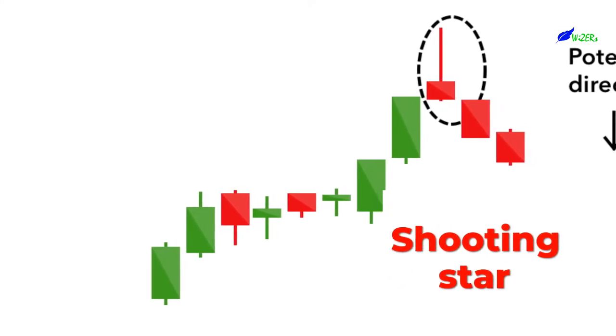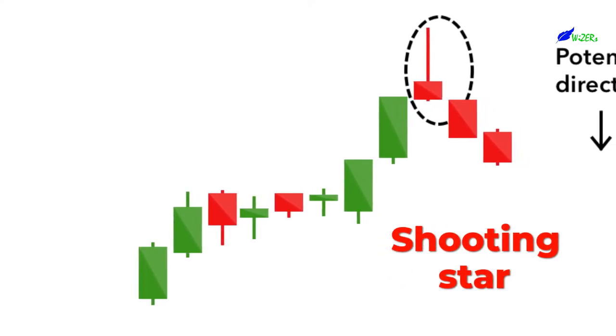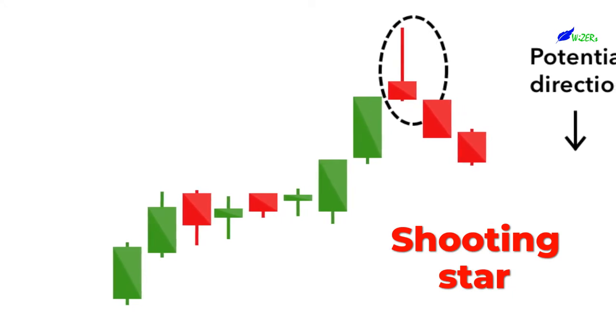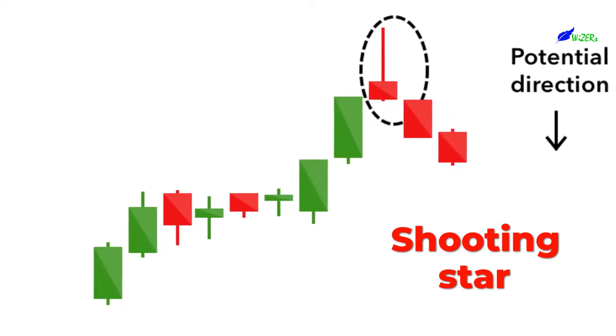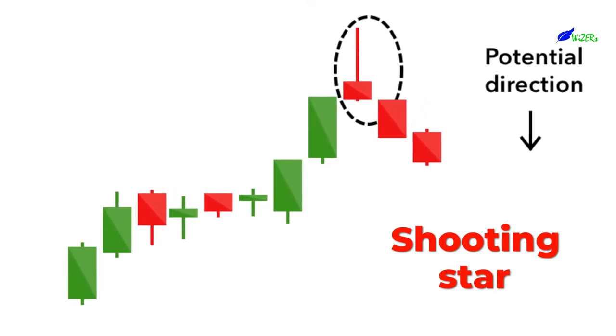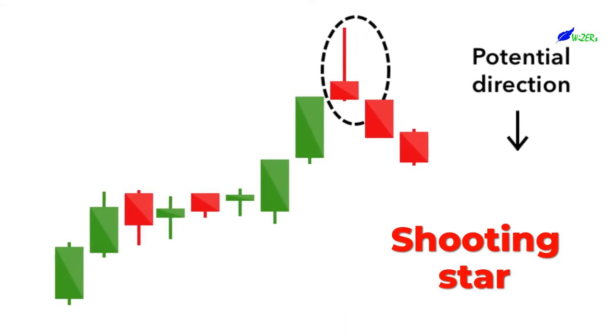Shooting Star. The Shooting Star is the same shape as the inverted hammer, but is formed in an uptrend. It has a small lower body and a long upper wick. Usually, the market will gap slightly higher on opening and rally to an intraday high before closing at a price just above the open, like a star falling to the ground.